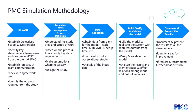Our methodology begins with a kickoff with clients to establish objectives, scope, and deliverables. We identify the team, stakeholders, roles, and designate a single point of contact from the client and PMC. Then we formulate inputs and assumptions, working together with the client. We identify the key flow process — even using a process flow chart. The next step is data collection. If a client doesn't have data, we can use data from a sister plant or formulate data from our own history. We build and validate the model, then document the process.